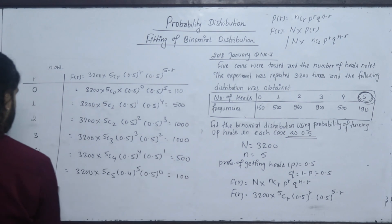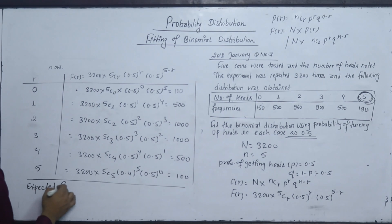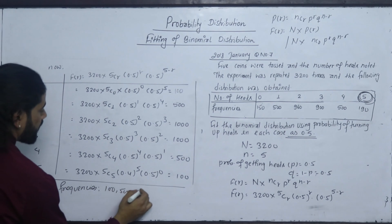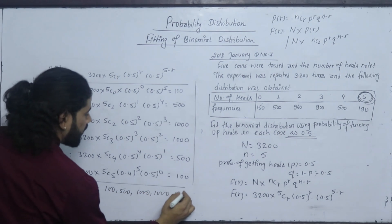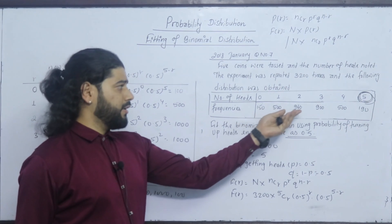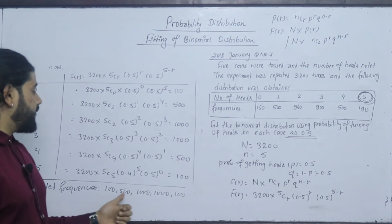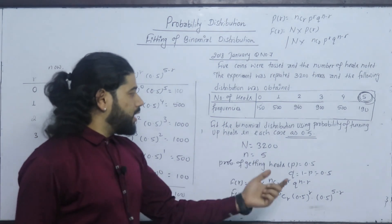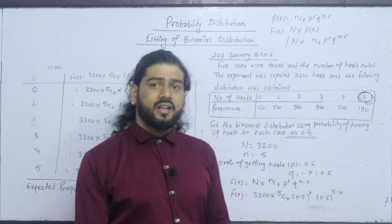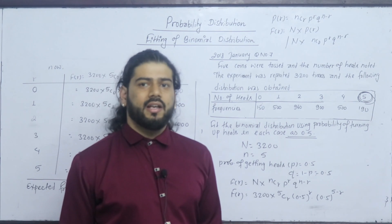So these are the expected frequencies: 100, 500, 1000, 1000, 500, 100. In this case, we can see that the real observations are 150, 500, 969, and 190. The binomial distribution fitted values are 100, 500, 1000, 1000. If we can do that by providing success or failure with p equals 0.5, we can assess the nature of the fit.